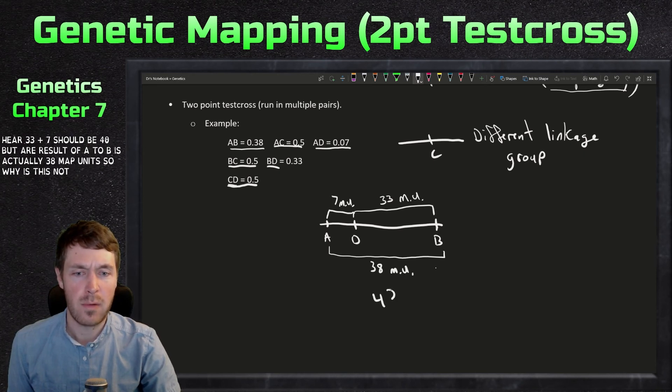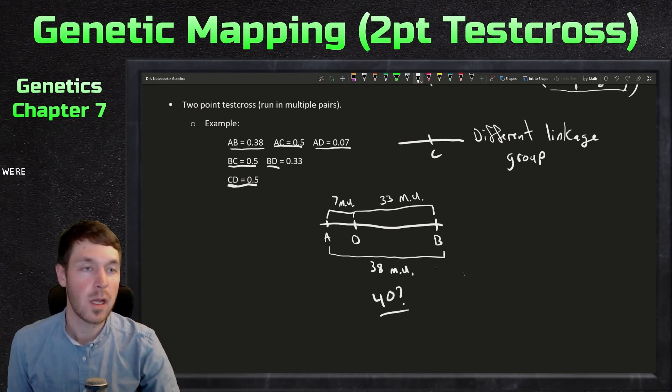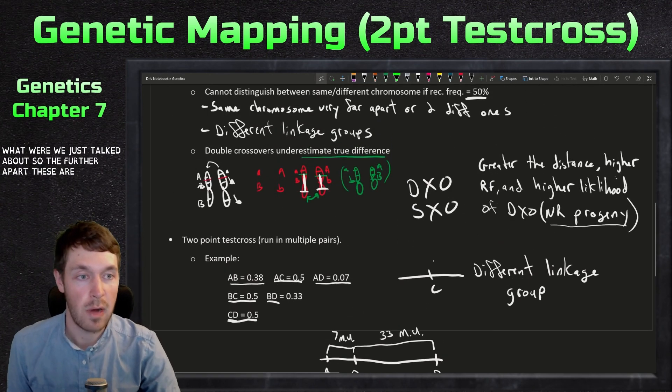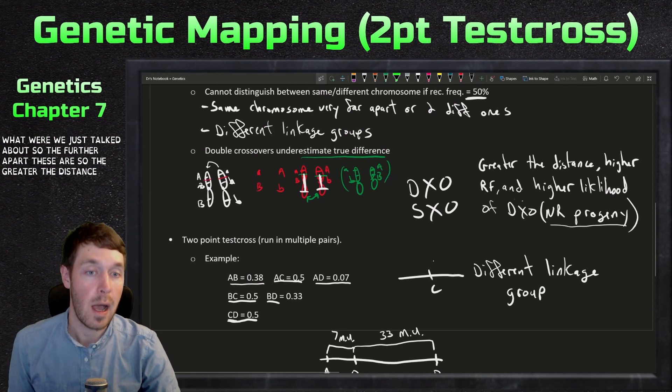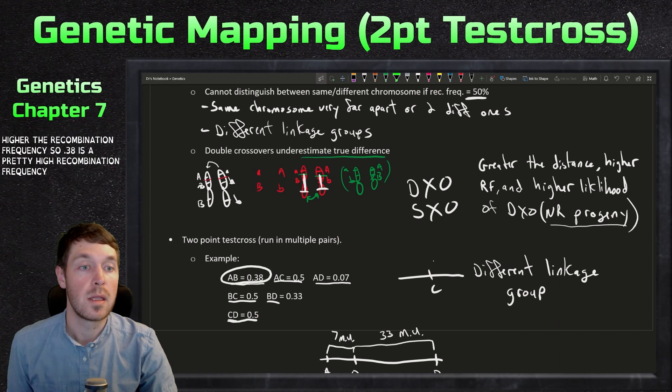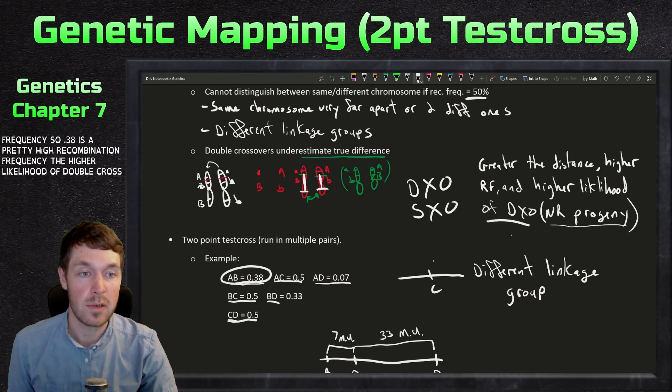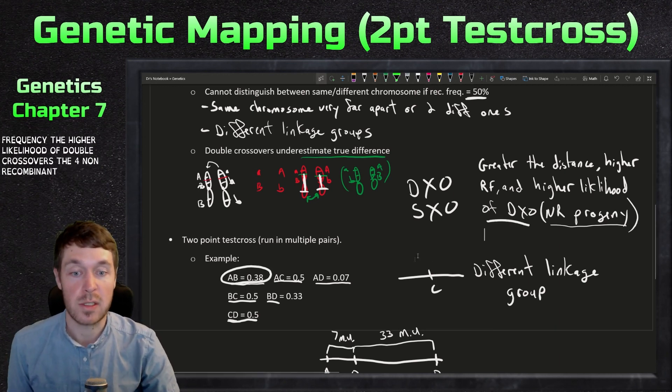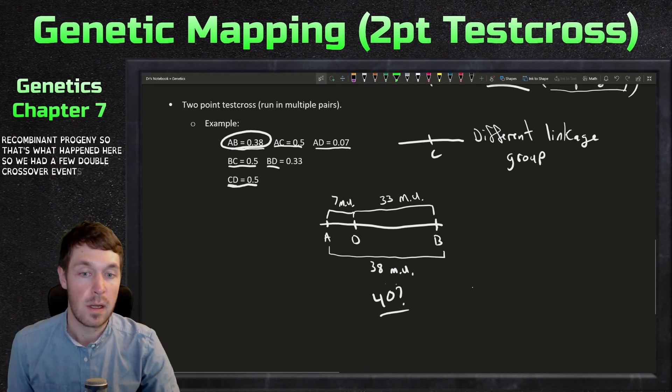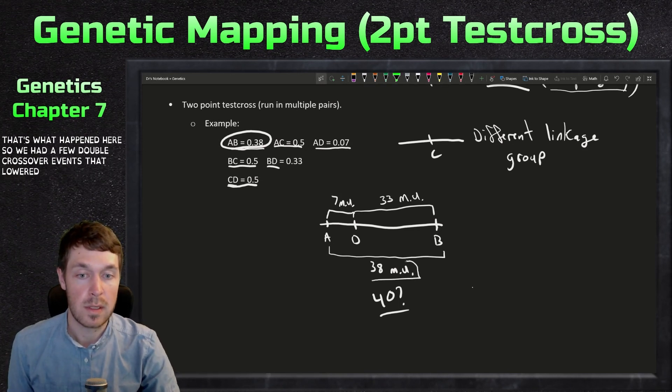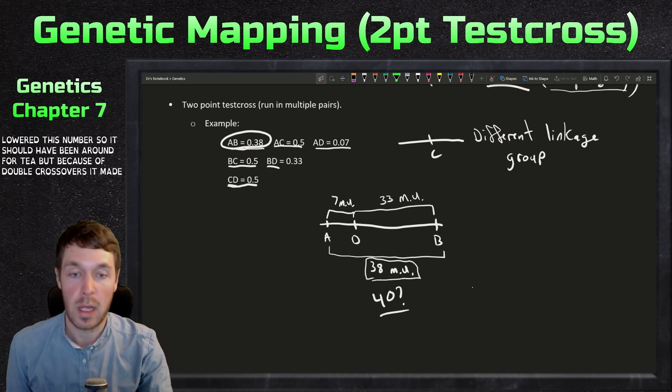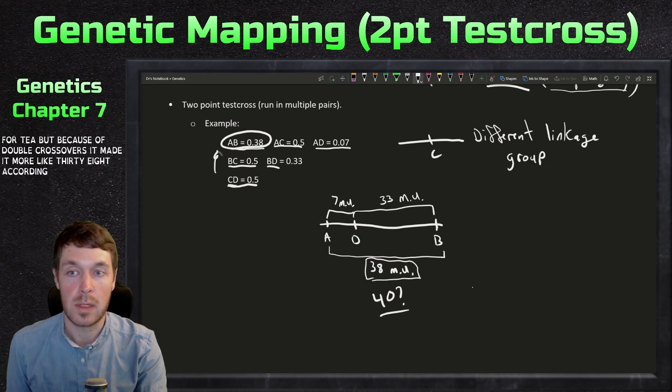So why is this not 40? What did we just talk about? So the further apart these are, so the greater the distance, the higher the recombination frequency. So 0.38 is a pretty high recombination frequency, the higher likelihood of double crossovers to form non-recombinant progeny. So that's what happened here. So we had a few double crossover events that lowered this number. So it should have been around 40, but because of double crossovers, it made it more like 38 according to the data.